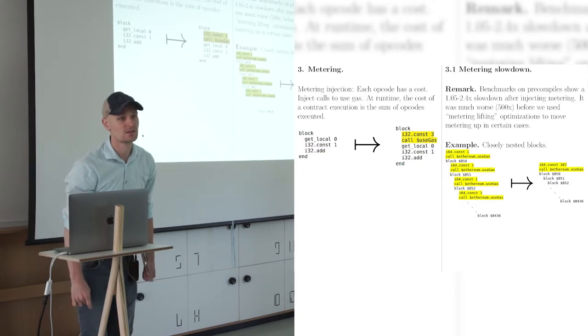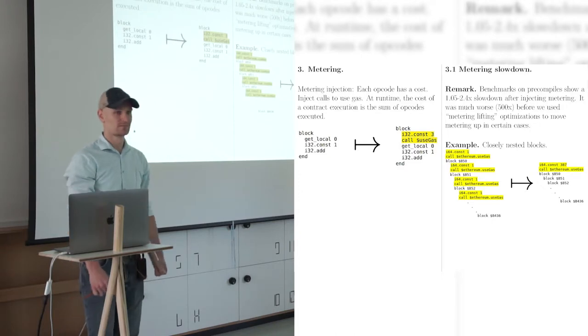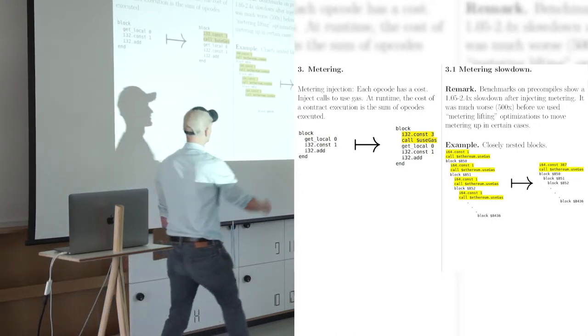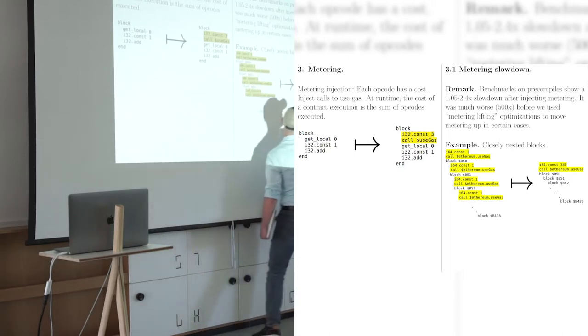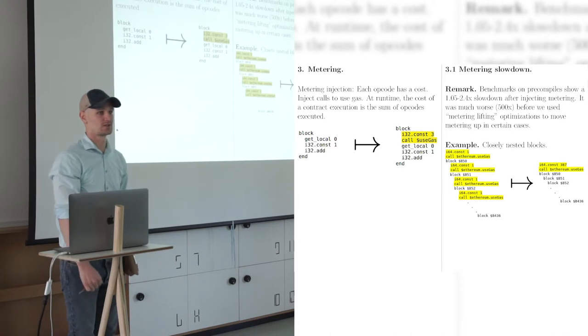I think there is a guarantee if you're guaranteed that you're going to execute through. So there's no chance of branching away from it. Yeah, no, no, sorry. What I mean is, so if you're paying for the execution time of the contract, then the call Ethereum use gas is part of the execution time of the contract, right? So a hundred call Ethereum use gas takes more time than one call Ethereum use gas with a higher number. So when you do this lifting, do you recalculate that? Yes. That price is part of that. Yes. So these are all ones and this ended up being 387. Okay.